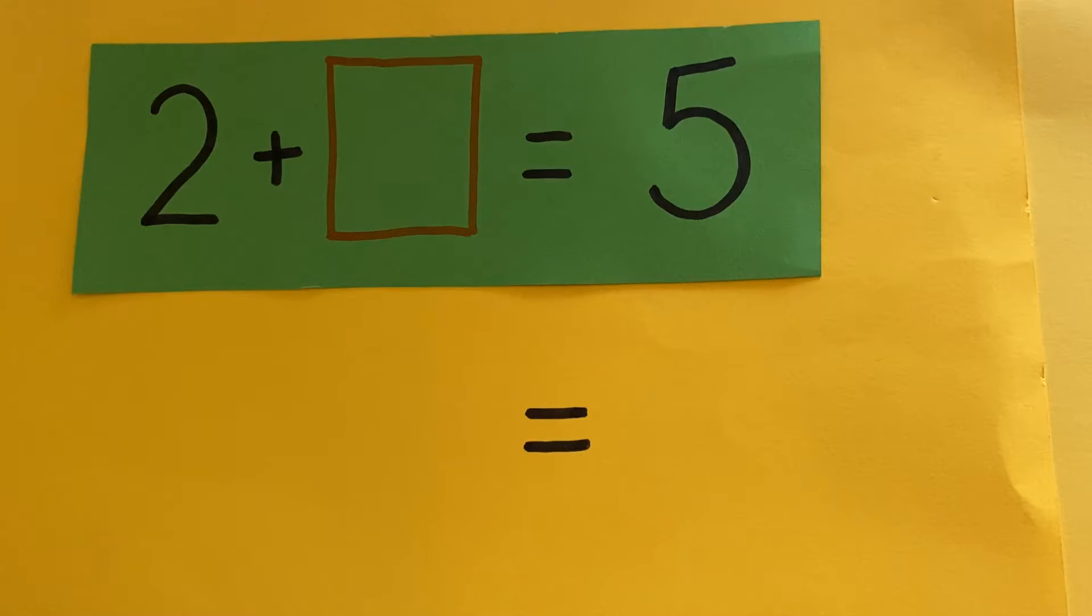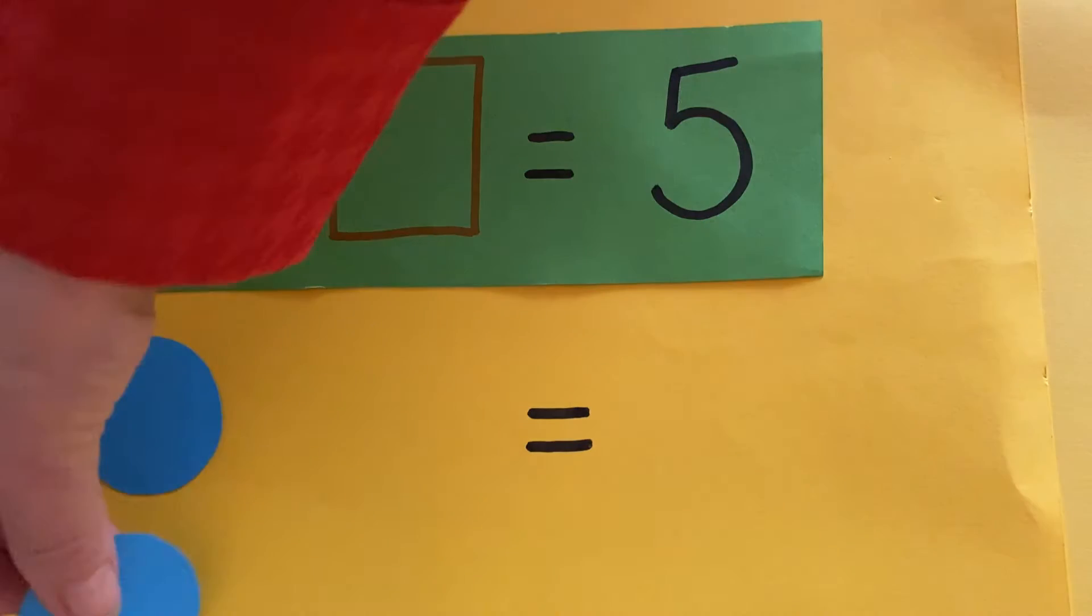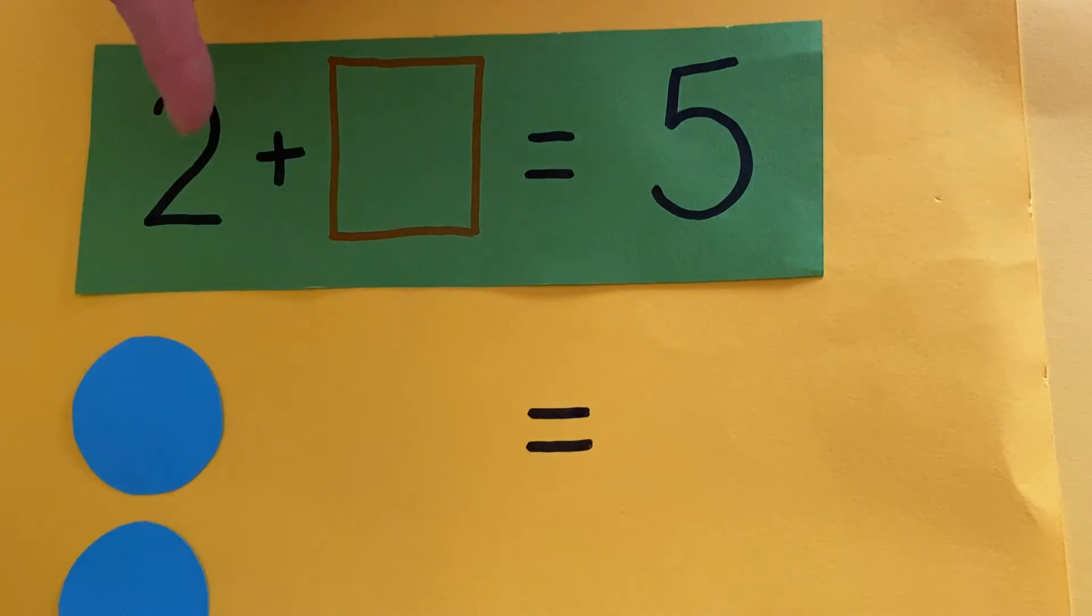Take a look at this one. Here's a number sentence with a missing number. Two. Add something equals five. It's the same as five. Let's use my counters. I'm going to need two counters this side.